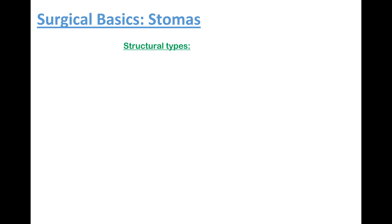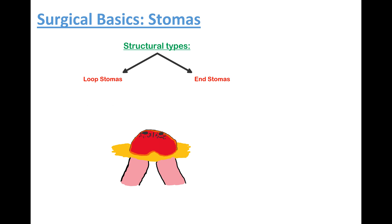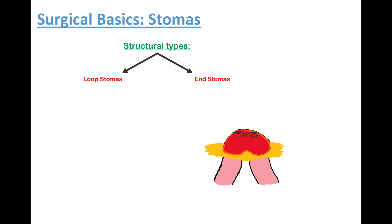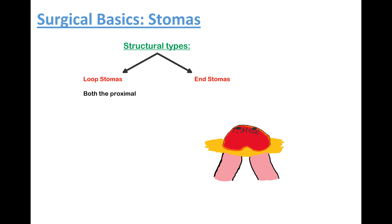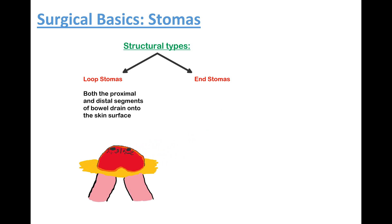So the way a stoma is fashioned depends on its function. Structurally, there are two main types of stomas: there are loop stomas and there are end stomas. Loop stomas are created when an entire loop of colon or bowel is brought through an opening in the abdominal wall, meaning that both the proximal and the distal segments of the bowel drain onto the skin's surface. These are mainly used as a temporary measure to protect a distal anastomosis, and that's because it's relatively easy to reverse — all you need to do is re-anastomose the ends of the loop and then simply drop it back into the abdomen.